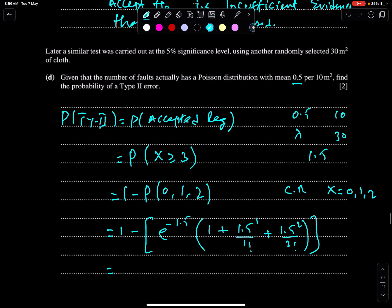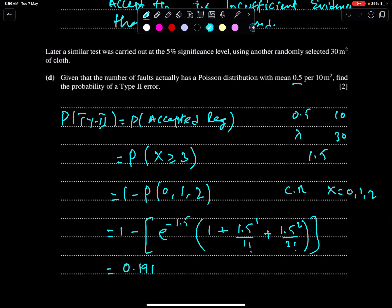0.191. Make sure you give your answer up to three significant figures. Hope this lecture will help you to understand the type 1 and type 2 error probabilities in Poisson distribution. Good luck.